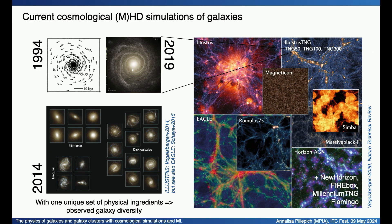Simulations like these are Illustris or EAGLE. Illustris was completed by Mark Vogelsberger, Deborah Sijacki, Shai Genel, Paul Torrey, with Volker and Lars. Together with EAGLE, I think they really opened up a new era of cosmological simulations of galaxies by showing that with one unique set of physical ingredients, you can actually reproduce the observed galaxy diversity.